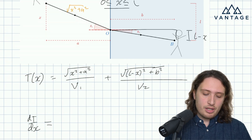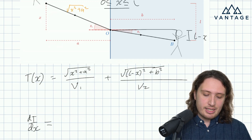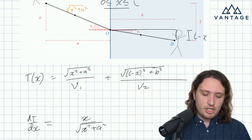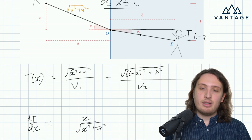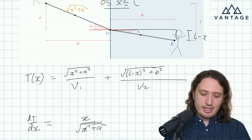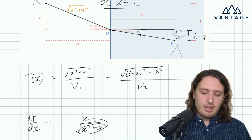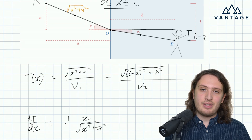We can use the chain rule. The first term clearly differentiates to give x over the square root of x² plus a², using the chain rule. That term has a power of a half, so we bring down a multiple of a half and reduce the power to minus a half — hence it's a division — and we pick up a factor of 2x from the chain rule. The two cancels the half and we're left with x. So that's a nice easy derivative.